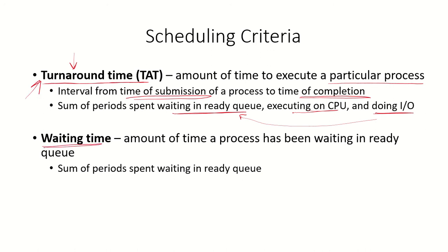The waiting time of a process is the time it has spent waiting in the ready queue. While a process may also wait in input/output queues, we are more concerned with the time it waits for the CPU. There could be multiple times it enters the ready queue after completing input/output or waiting for other events, and the sum of all those periods contributes to the waiting time.